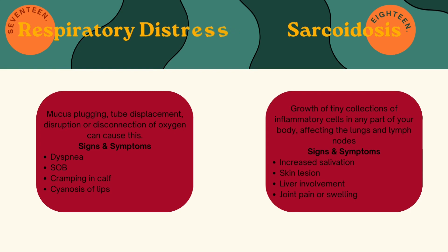Respiratory distress can be caused by mucus plugging, a tube displacement, or a disruption or disconnection of oxygen. Signs and symptoms include dyspnea, shortness of breath, cramping in the calves, and cyanosis of the lips.